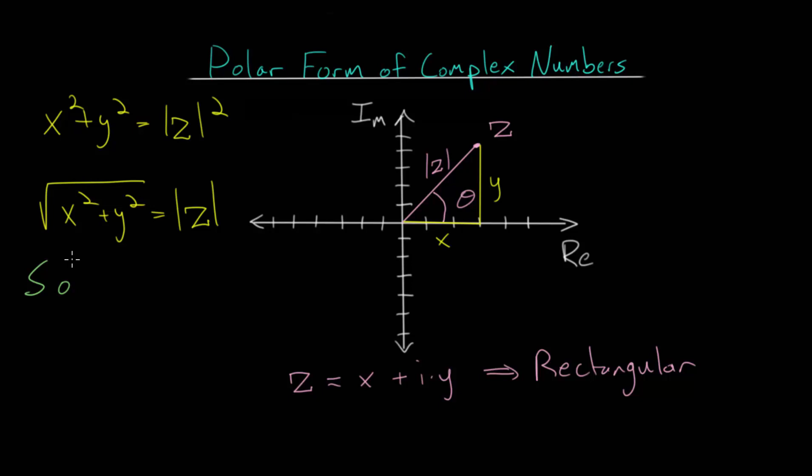And if we want to relate x and y to the angle, we need to use our right triangle trigonometry, and we can use soh katoa to remember the definitions. And x is adjacent to this angle, and y is opposite the angle, and the magnitude, this absolute value of z, this is the hypotenuse.